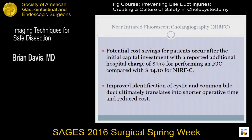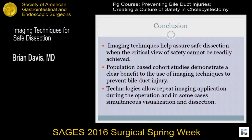Potential cost savings after initial capital investment compared with cholangiogram are significant given the low cost of indocyanine green. With improved identification of the cystic duct, the real cost saving may translate into shorter operative times and reduced cost in the operating room. In conclusion, the imaging techniques help assure safe dissection when the critical view of safety cannot be readily achieved. The population-based and cohort studies argue significantly for routine cholangiography and use of adjunctive imaging technologies to facilitate safe dissection. They allow repeat imaging in many applications, and newer technologies allow simultaneous visualization and dissection. Thank you.